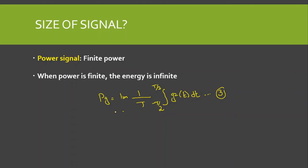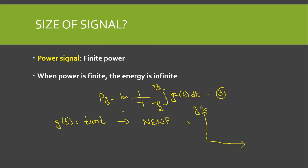It is not necessary that a signal be either a power signal or an energy signal — it can be neither. For example, g(t) = tan(t) is a periodic signal, but it is neither an energy nor a power signal, because its amplitude approaches infinity as time approaches infinity. Similarly, a signal that grows without bound is also neither. However, a signal whose amplitude neither approaches zero nor approaches infinity can be called a power signal.